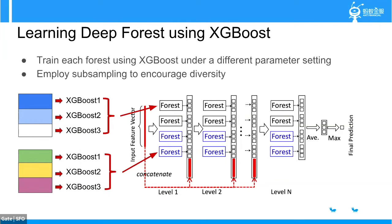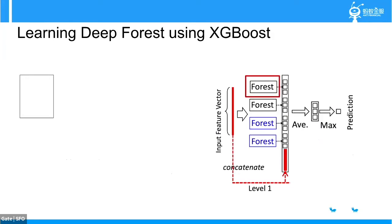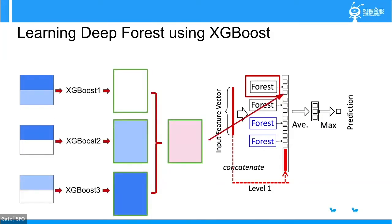We use XGBoost under different parameter settings for each forest, and we employ subsampling to encourage diversity, which is critical for the success of the forest. For example, the first forest might be a mini-ensemble of three XGBoost models, and each forest might be a different ensemble of some XGBoost models. To build the first forest on level one, we split the dataset into three parts, and for each part we train XGBoost. Then we use those XGBoost models to make predictions on the whole dataset, resulting in three predictions for the same dataset. We take the average of them as our augmented feature for the first forest on level one.